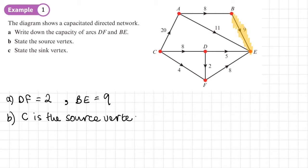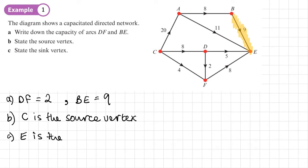There are no other vertices where all edges are leaving — you could check all the others. Here one is going in and two in, one coming out. D has one coming in and two going out. A has one coming in and two coming out. C is the only one where they're all directed away from it. For part C, the sink vertex is E because all edges are directed towards it.